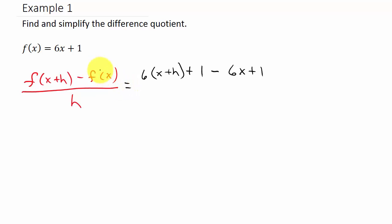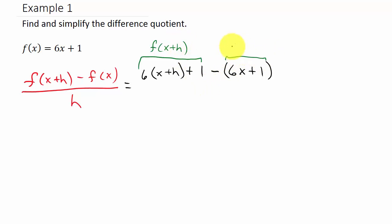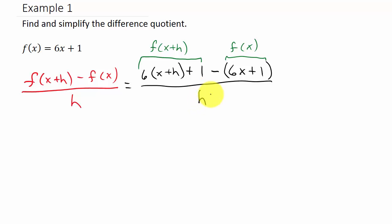The important thing here is you see how I put minus this 6x plus 1? You have to make sure that's in parentheses because it's minus this whole thing. So there's our f of x plus h minus f of x, all over h. What we're trying to do when we simplify is get the h out of the denominator. Let's see what we can do with the numerator.